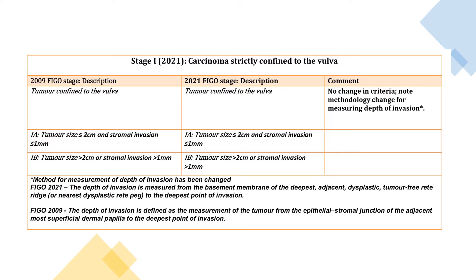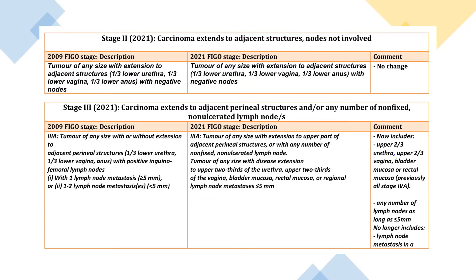Stage 1 is tumour confined to the vulva. 1A is tumour size less than or equal to 2 cm and stromal invasion less than or equal to 1 mm. 1B is tumour size greater than 2 cm or stromal invasion greater than 1 mm. Stage 2 is carcinoma extending to adjacent structures with nodes not involved — tumour of any size with extension to the lower third of the urethra, lower third of the vagina, or lower third of the anus, with negative nodes.